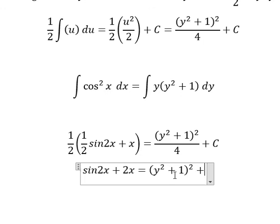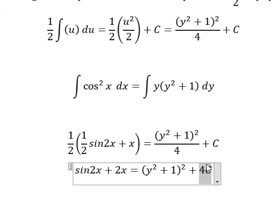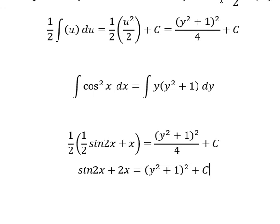And we have 4c. We know that 4 multiplied by a constant is still a constant, so we just write c. And that is the final answer.